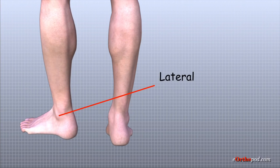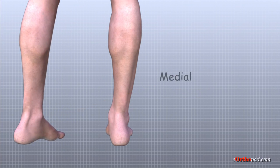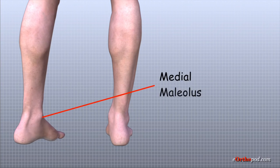The bony bump on the lateral side is called the lateral malleolus. The inside of the ankle is referred to as the medial side. The bony bump on the medial side is called the medial malleolus.